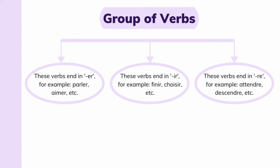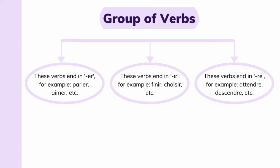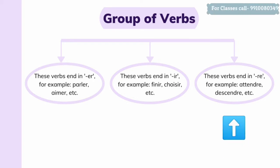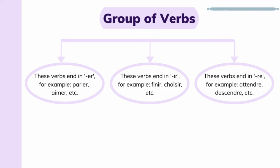The second group of verbs is the verbs ending in IR. For example, finir, choisir. And the third group verbs are the ones which end in RE. For example, attendre, descendre, prendre, etc.